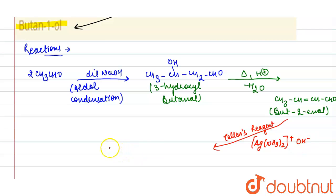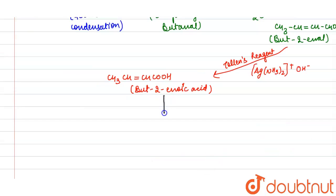So this is butenoic acid. Butenoic acid on reduction in presence of nickel and hydrogen as a catalyst, it is converted into butanol. This is butan-1-ol, so this is the desired product.